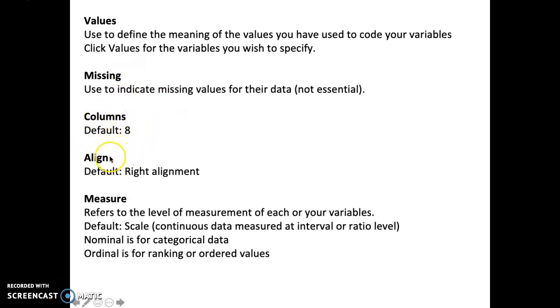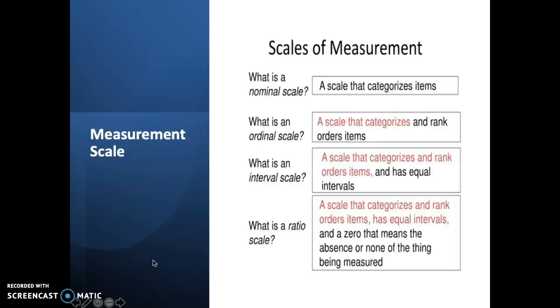And then we have align. By default, it has been set right alignment. You can change it into left alignment as well as center. And then we have measure. Measure refers to the level of measurement of each of your variables. By default, SPSS has set scale measurement. So what is scale? It's continuous data measured at interval or ratio level. Nominal is for categorical data. And ordinal is for ranking or ordered value. So this is a scale of measurement.